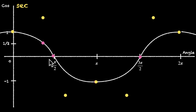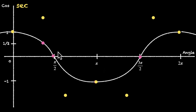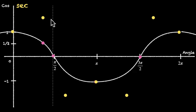What about the points pi by 2 and 3 pi by 2? The value of cos is zero there. But the reciprocal of zero is not defined, which means the value of sec is not defined for these points — you cannot divide anything by zero. There is no output for pi by 2 and no output for 3 pi by 2. So let's draw a dotted line to indicate there is no value for sec x at these points.